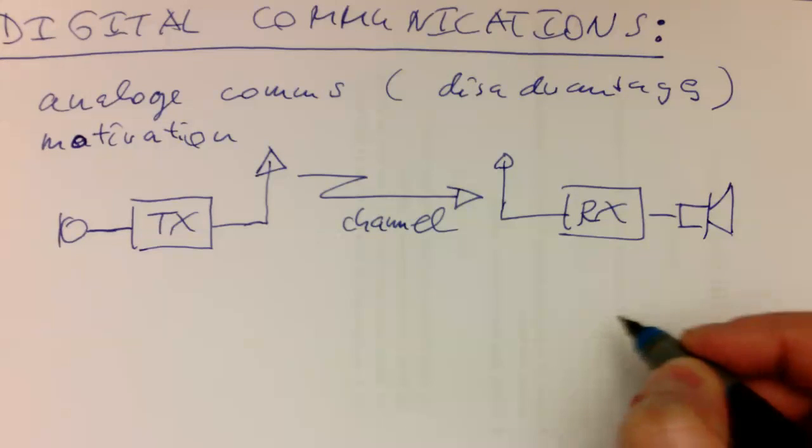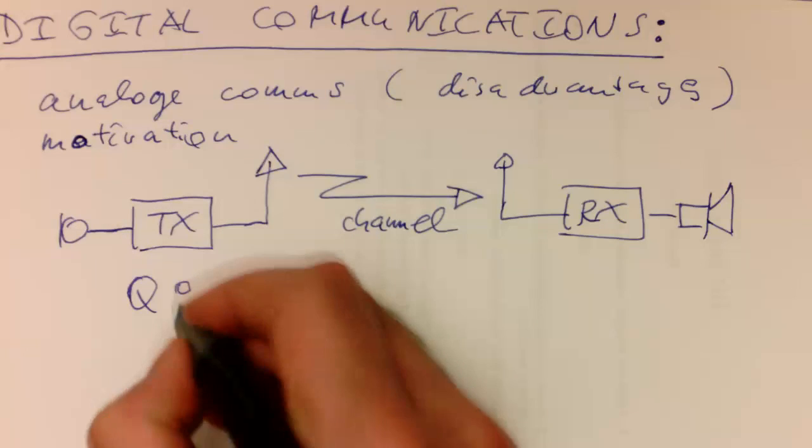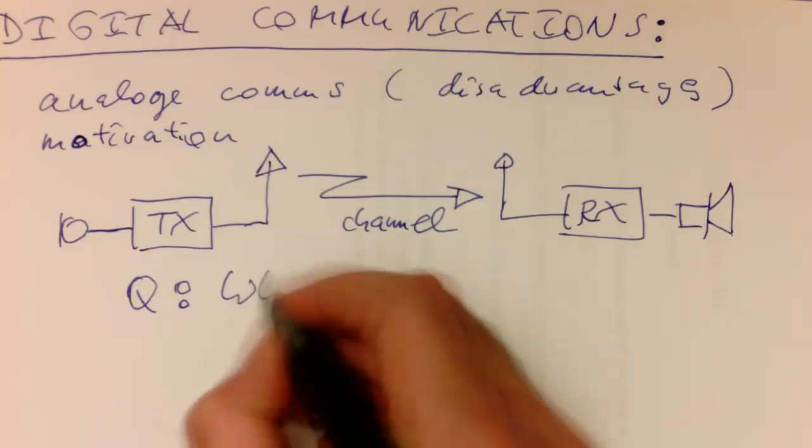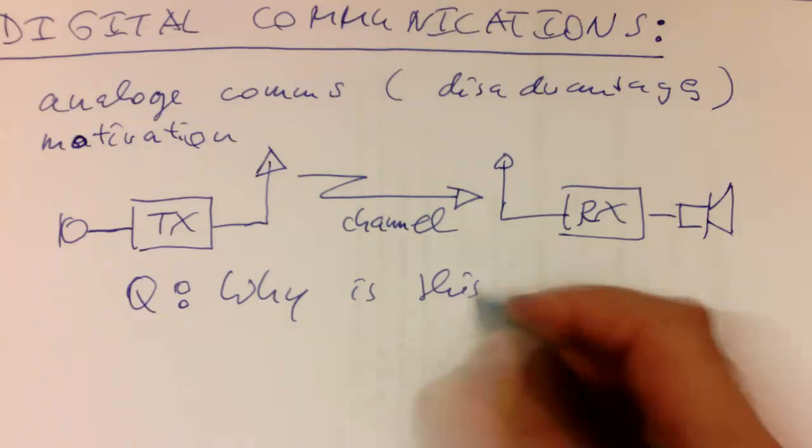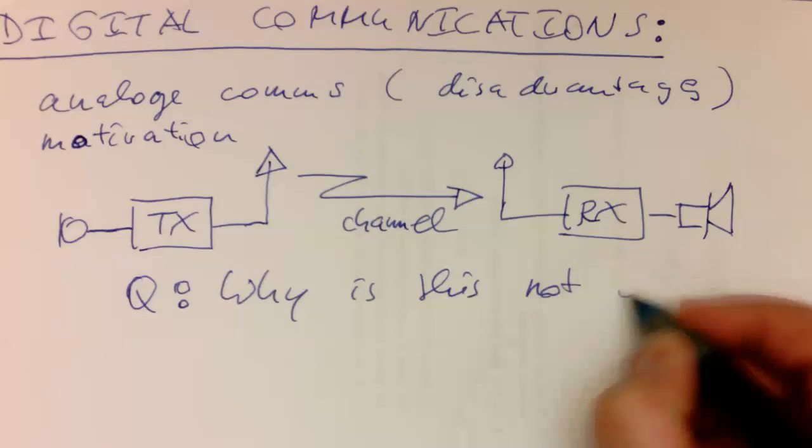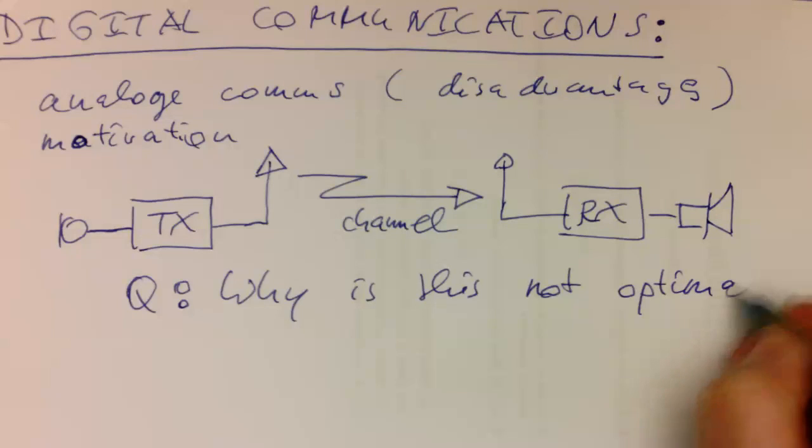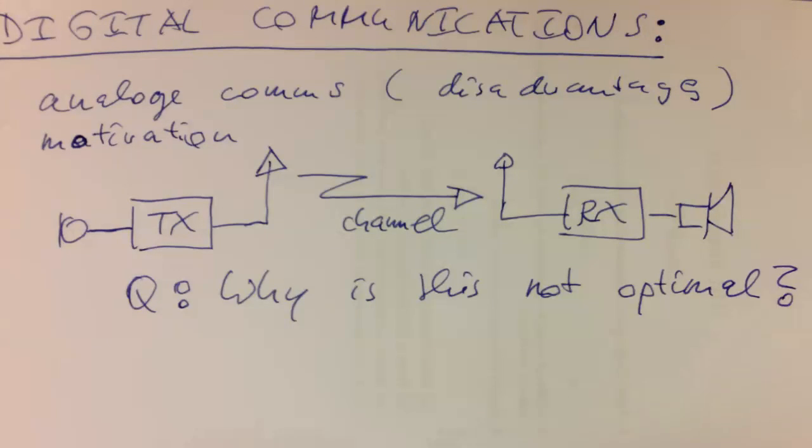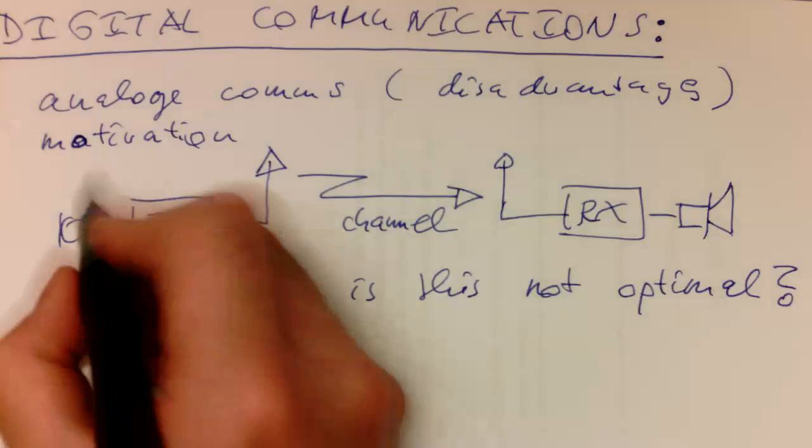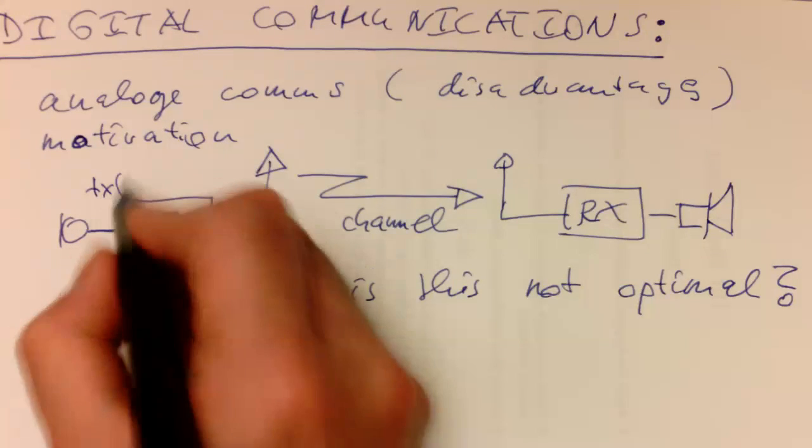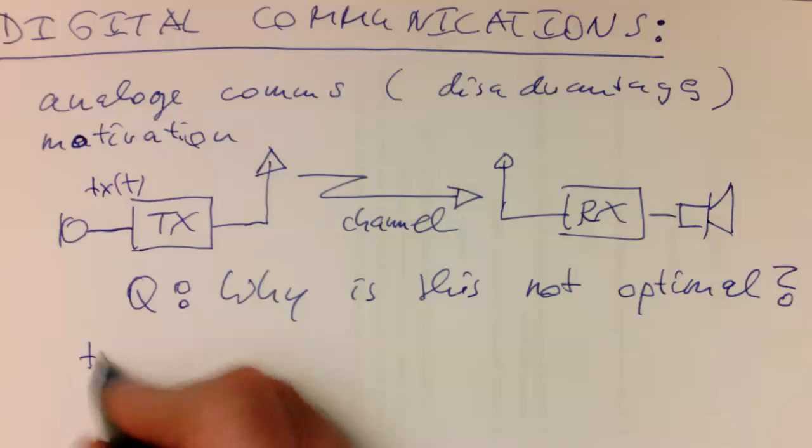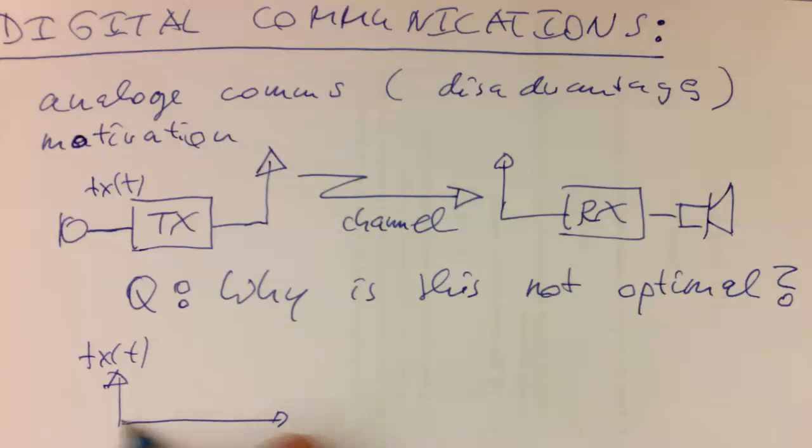So the question is now, why is this not optimal? Why are there problems? Imagine we are transmitting a signal here. Let's call this Tx of t. And this signal looks quite pulse-like. Let's say you would like to transmit something like that.